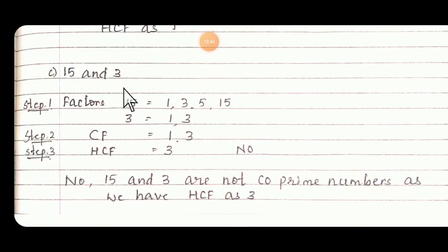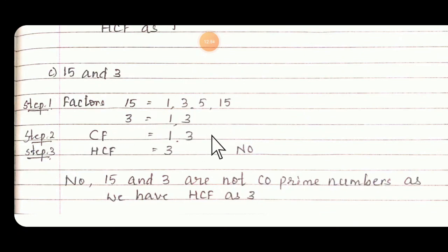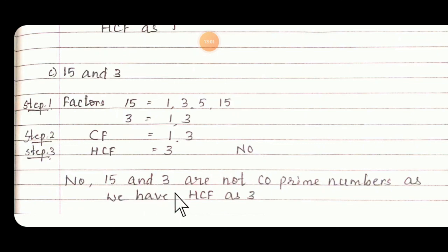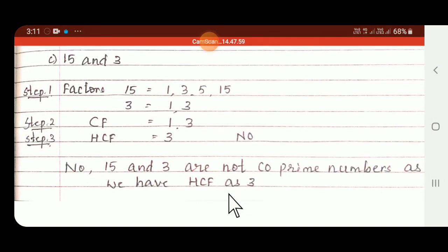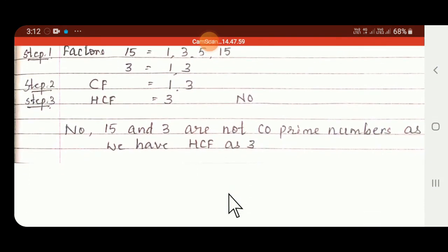C: 15 and 3. Step 1: find factors for 15 and factors for 3. The common factors are 1 and 3, and the highest one is 3. So this is not a co-prime number. No — 15 and 3 are not co-prime numbers as we have highest common factor as 3.